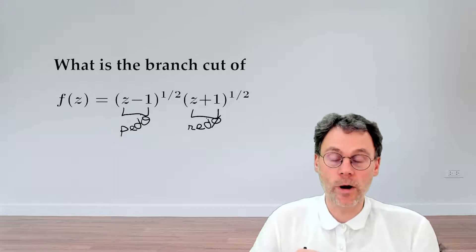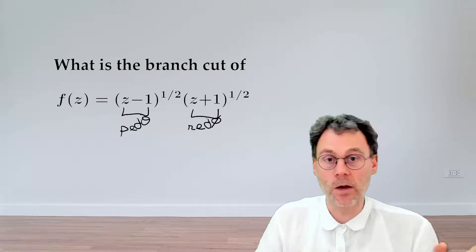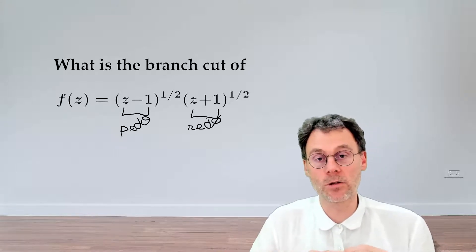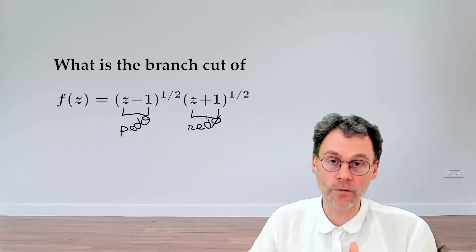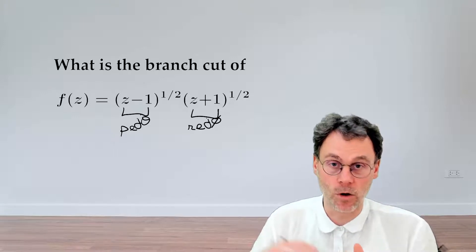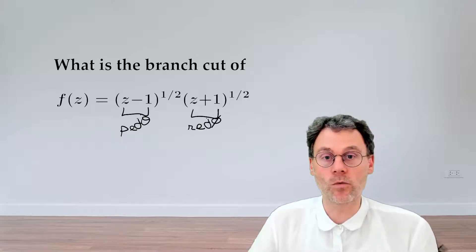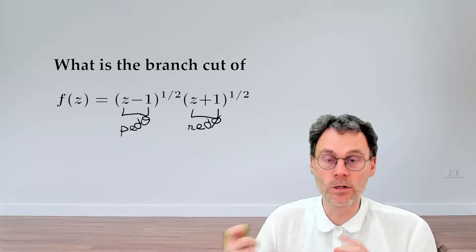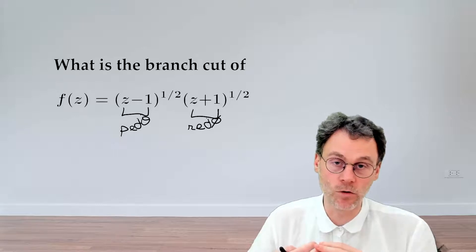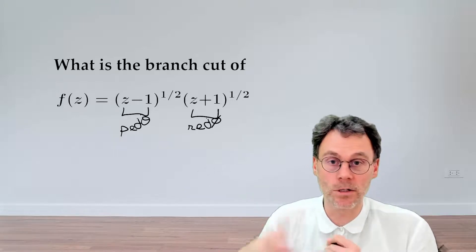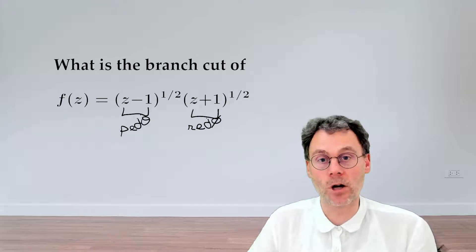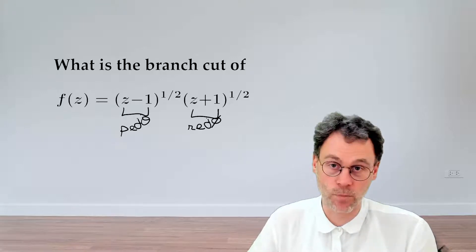First of all, our branch points. So where do we have a branch point? If we look back at a simpler situation, just z to the power of one half, there the branch point is the origin. The origin is a situation where we no longer have any ambiguity with respect to the sign of the solution, because plus 1 is the same as minus 1. So this is where we have the start of our branch cuts in the branch points.